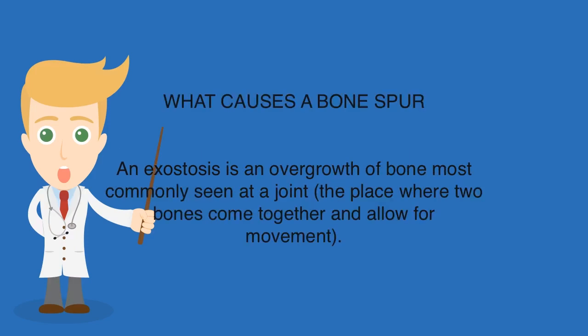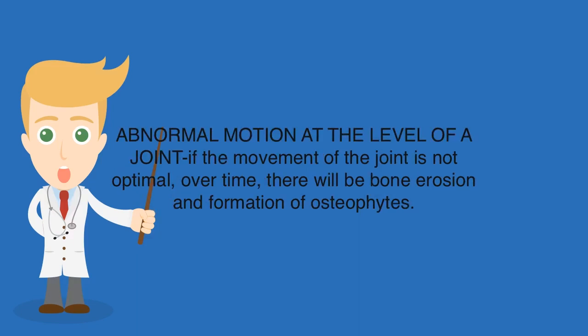What causes a bone spur? An exostosis is an overgrowth of bone most commonly seen at a joint — the place where two bones come together and allow for movement. Abnormal motion at the level of a joint: if the movement of the joint is not optimal, over time there will be bone erosion and formation of osteophytes.